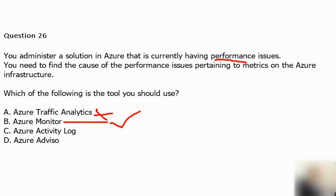Option C is Azure Activity Log. The Azure Activity Log is a platform log in Azure that provides insight into subscription-level events. It includes information like when a resource is modified or a virtual machine is started. It only keeps this log and does not store any performance data, so it is not the correct option.